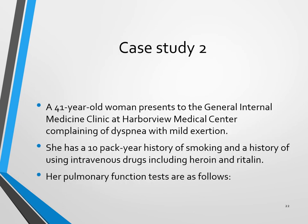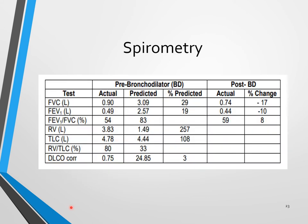This is our second case study. It's a 41-year-old woman who presents to a medical clinic complaining of dyspnea on mild exertion. She has a 10-year smoking history and also a history of using intravenous drugs, which included heroin and Ritalin. Her pulmonary function test is as follows — she has dyspnea and mild exertion, so they're trying to figure out what's going on with her.